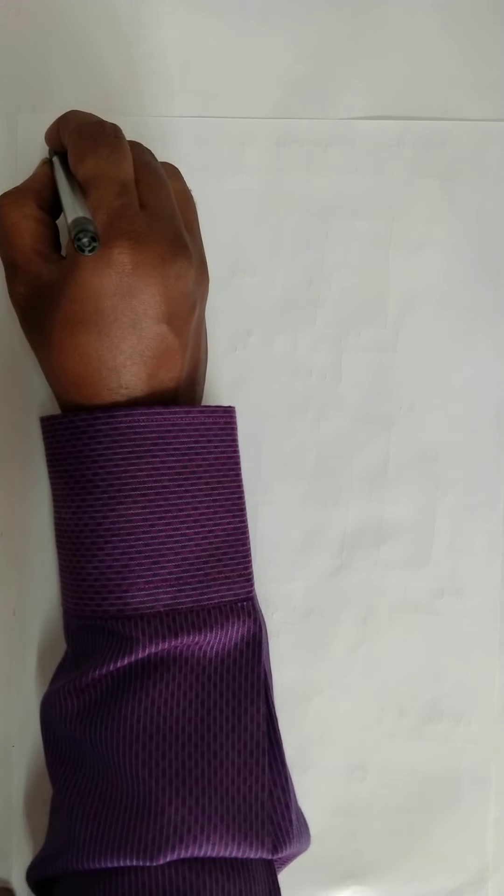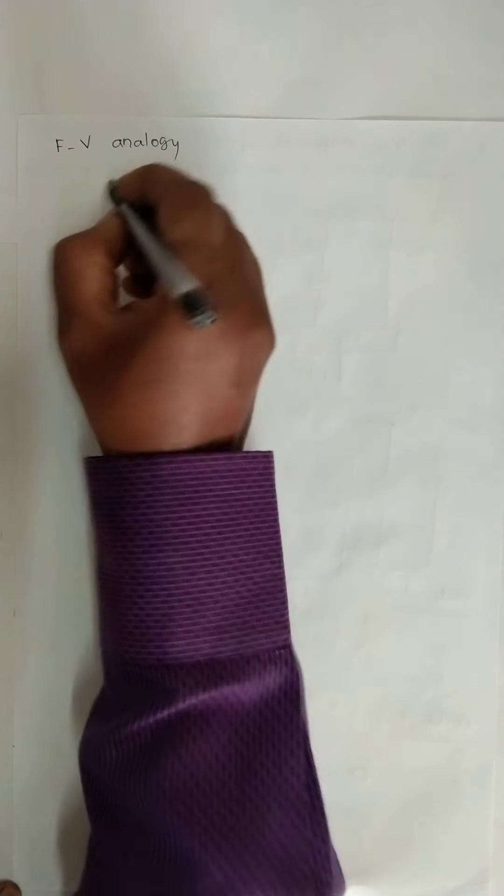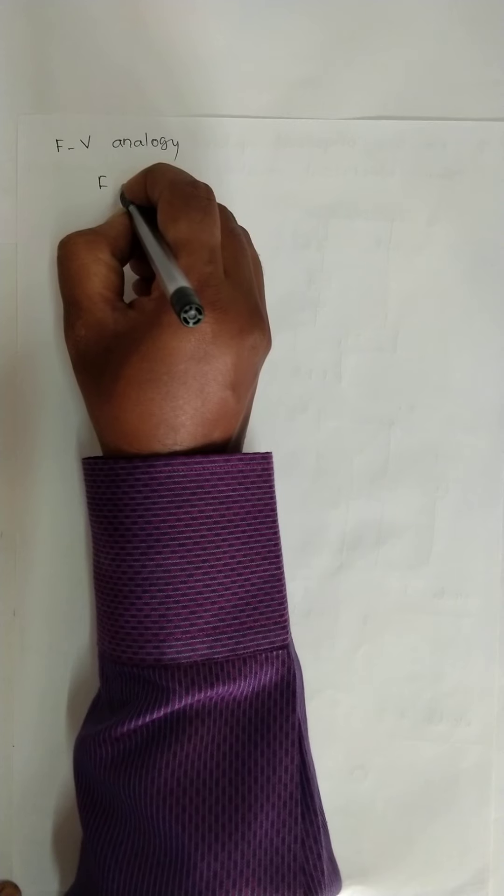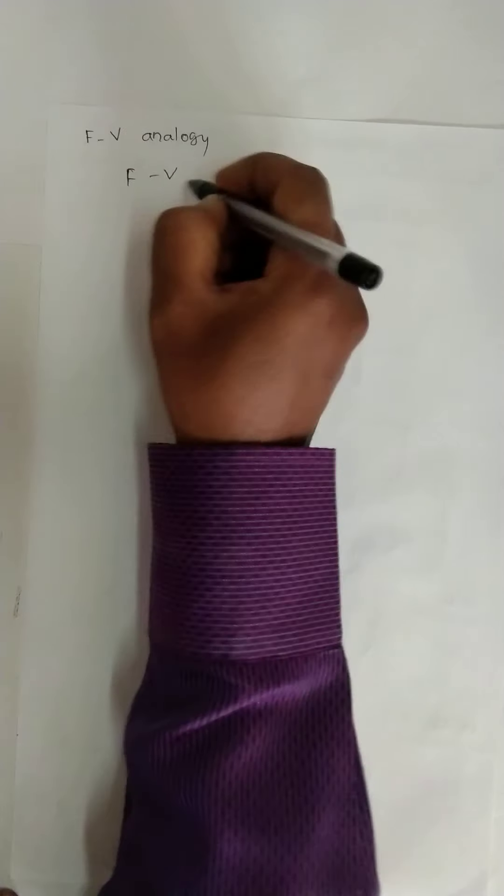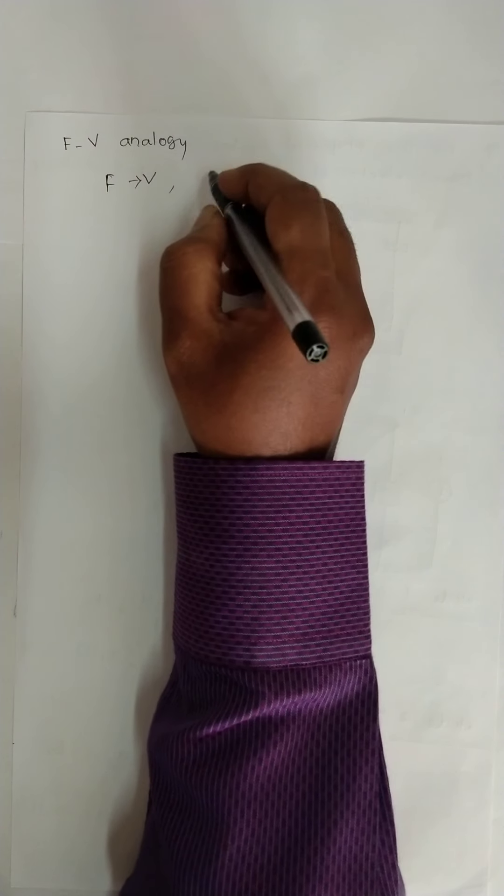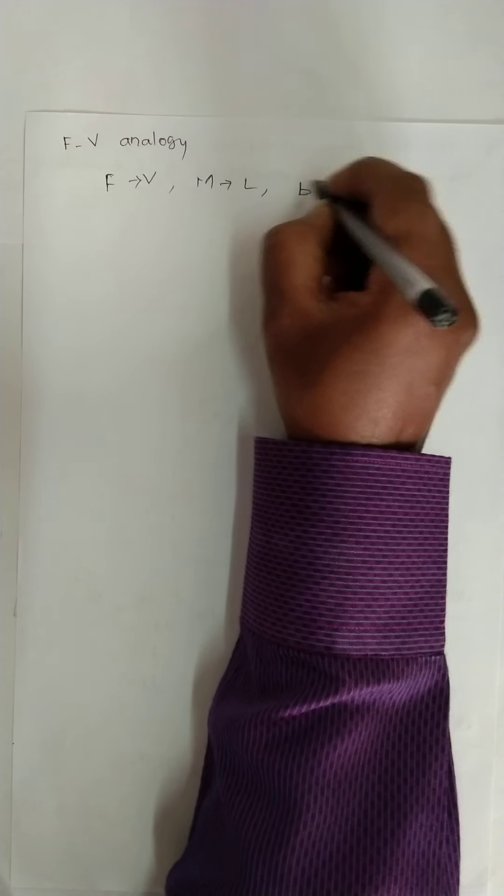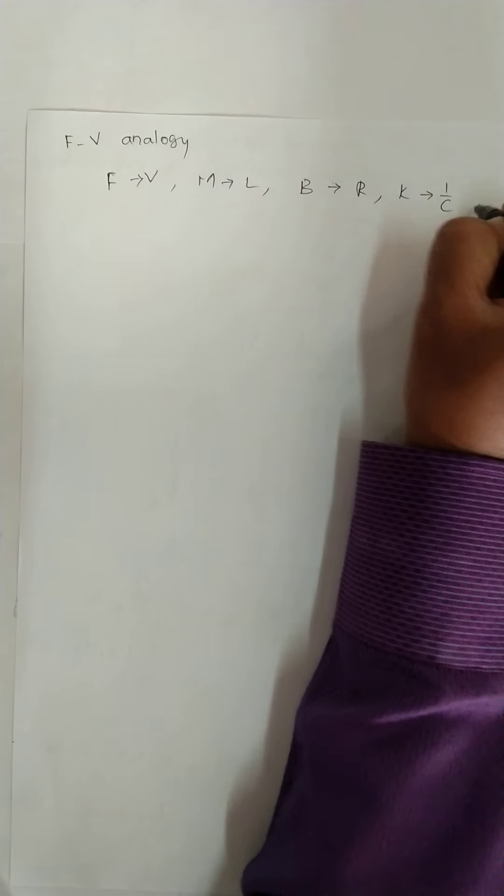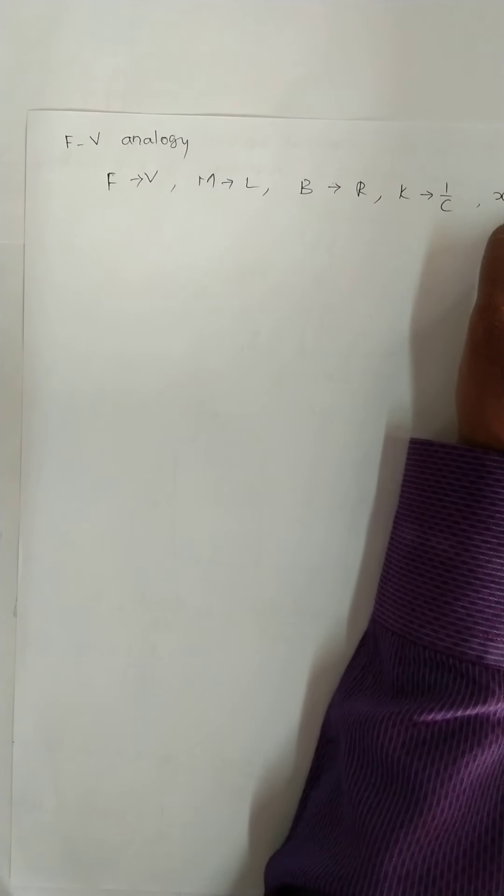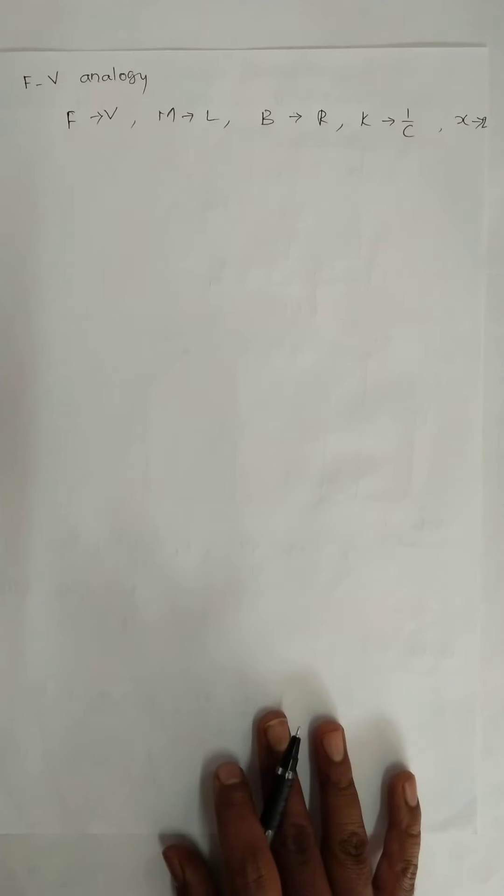After writing equilibrium equations, next is force voltage analogy. So F will be replaced by V, M is replaced by L, B is replaced by R, K is replaced by 1/C, X is replaced by Q.